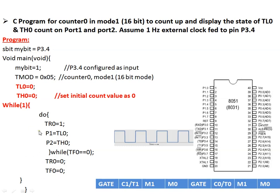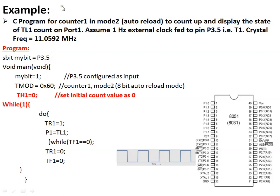The second example uses Counter 1 in Mode 2 (auto-reload mode) to count up, displaying TL1's state on Port 1. Since this uses Timer 1, pin P3.5 is configured as an input. The TMOD value to load is 0x60, and TH1 is initialized to 0. The timer is started and the value is automatically loaded into TL1, which begins incrementing. The TL1 value is shown on Port P1, and TF1 is monitored for overflow. When overflow occurs, the loop exits and the process repeats in an infinite while(1) loop.